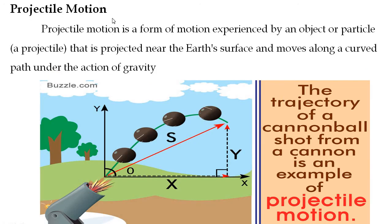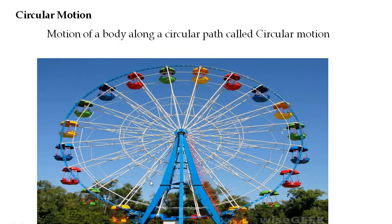Second, projectile motion: it is produced by an object or particle that is projected near the earth's surface and moves along a curved path under the action of gravity. The example shown is a cannonball shot from a cannon, which moves along a curved path under gravity.